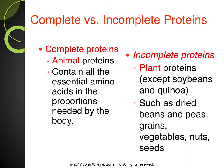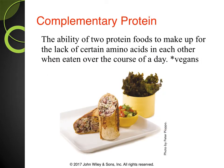Incomplete proteins — examples include plant proteins (except for soybeans and quinoa), dried beans and peas, grains, vegetables, nuts, and seeds. If you're vegetarian or vegan, you can get protein from these sources; you'll just need to increase the quantity you eat per day. A complementary protein is when you combine two protein foods to make up for the lack of certain amino acids in the other, when eaten over the course of the day. You're taking two plant proteins that don't have all essential amino acids, but when put together they create a complete protein.